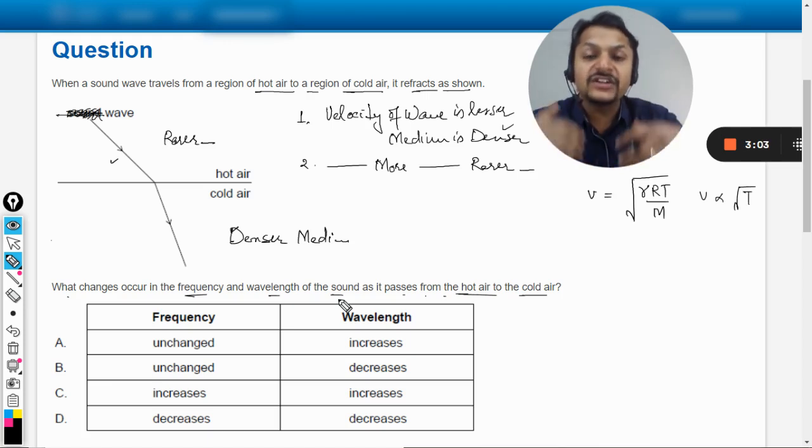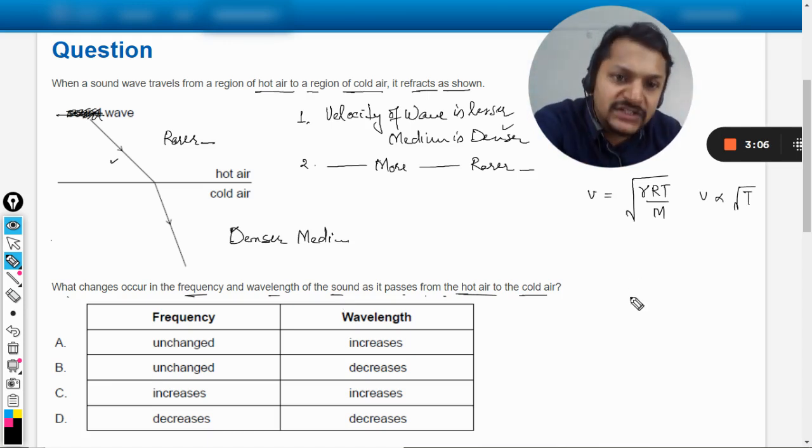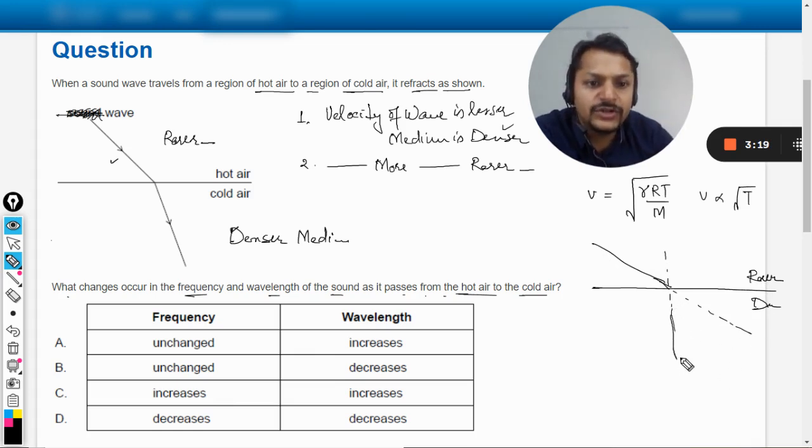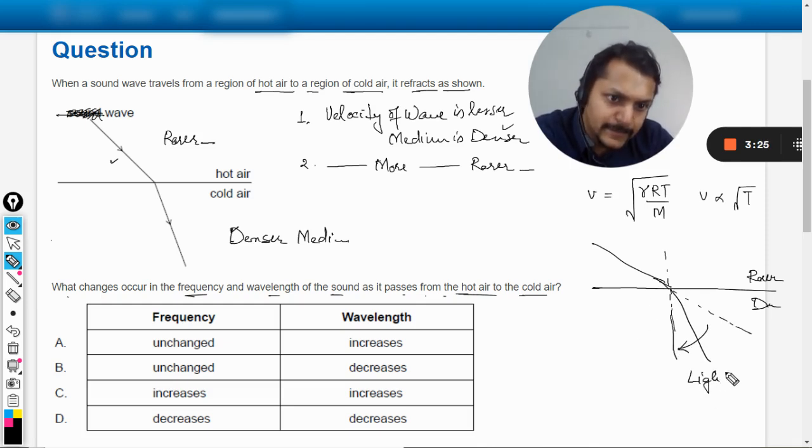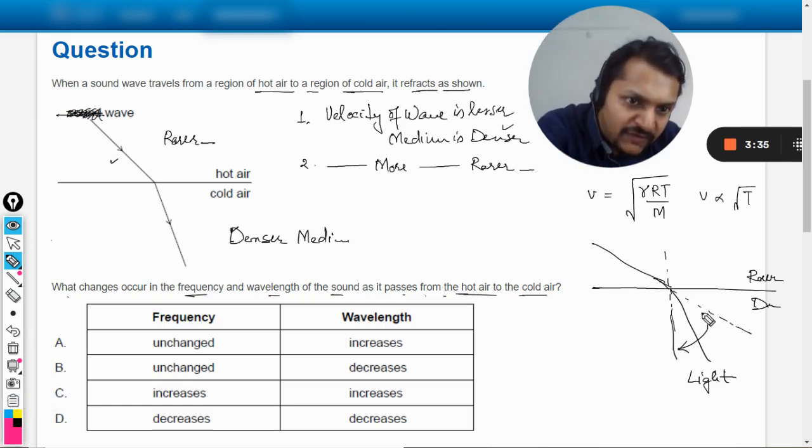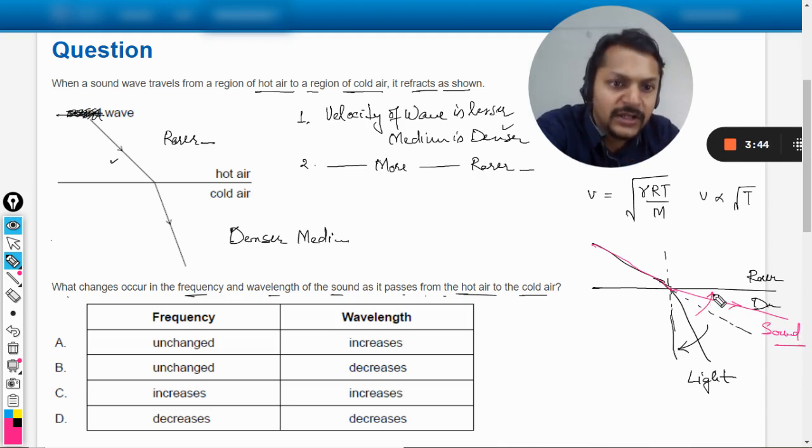Now the second thing that is very important is that in the case of sound, the refraction takes place in the opposite sense. Opposite sense means that let's say this is the denser medium and this is the rarer medium. And if the light is trying to enter into it like this, when it will enter into denser medium it will bend towards the normal. So this is light. But if we talk about sound wave, ironically the sound wave bends away from the normal.